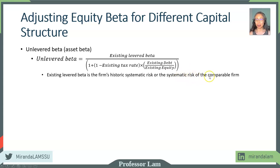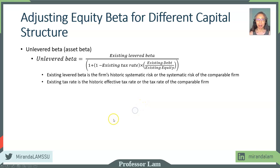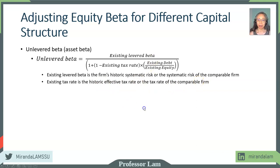Or if you're estimating this for a private firm, this can be the systematic risk of another firm or for the entire industry, like the one that we just saw in Professor Damodaran's website. We need to adjust for tax rate — this is the historic effective tax rate of the company, comparable firm, or the industry tax rate. And then this is the debt to equity ratio — the historic debt to equity ratio associated with the existing levered beta or the industry or comparable firm's debt to equity ratio.